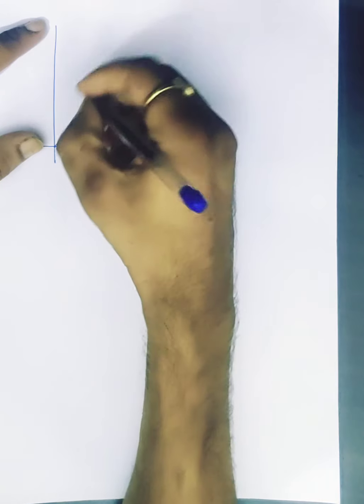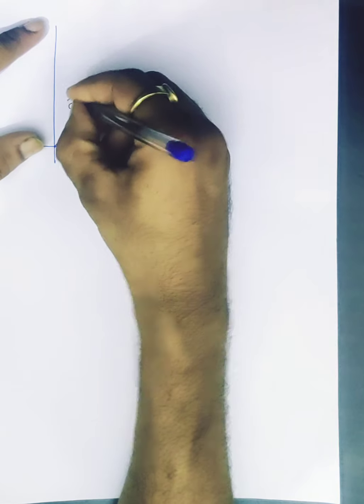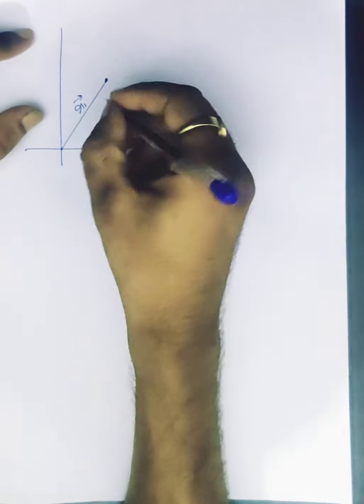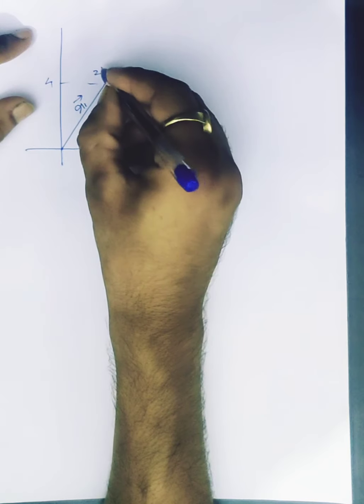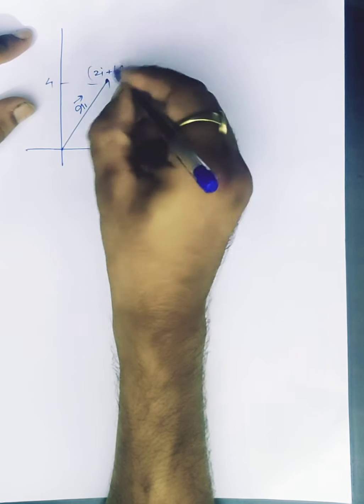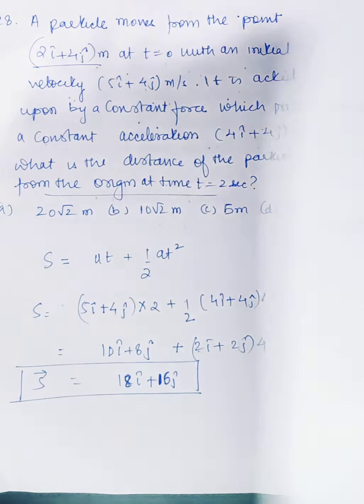Initially we can say that in r1 position the particle 2i plus 4j is called 2i, 2 and 4. 5i plus 4j. Now here displacement 18i plus 16j is a displacement.